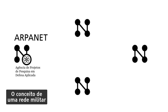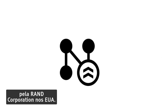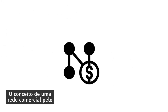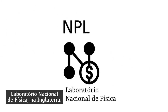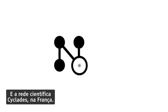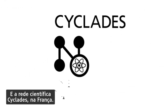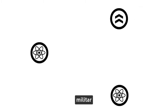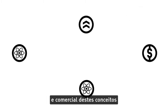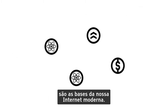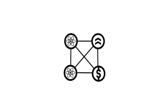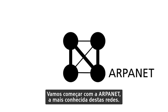Furthermore, three other concepts were to be developed, which are fundamental for the history of the internet: the concept of a military network by the RAND Corporation in America, the commercial network of the National Physical Laboratory in England, and the scientific network CYCLADES in France. The scientific, military, and commercial approaches of these concepts are the foundations for our modern internet. Let's begin with the ARPANET, the most familiar of these networks.